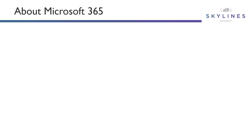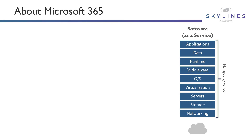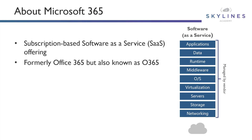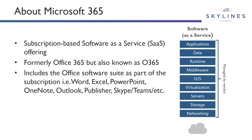Microsoft 365 is a subscription-based software as a service offering that allows the use of all sorts of different applications and services. Just to clarify on some terminology: when we talk about Office 365, that terminology still exists — we also call it O365 — and you may have heard it as Microsoft 365 or M365. Really we're all talking about the same thing. The only clear delineation between O365 and M365 is around the licensing leveraged within the tenancy.